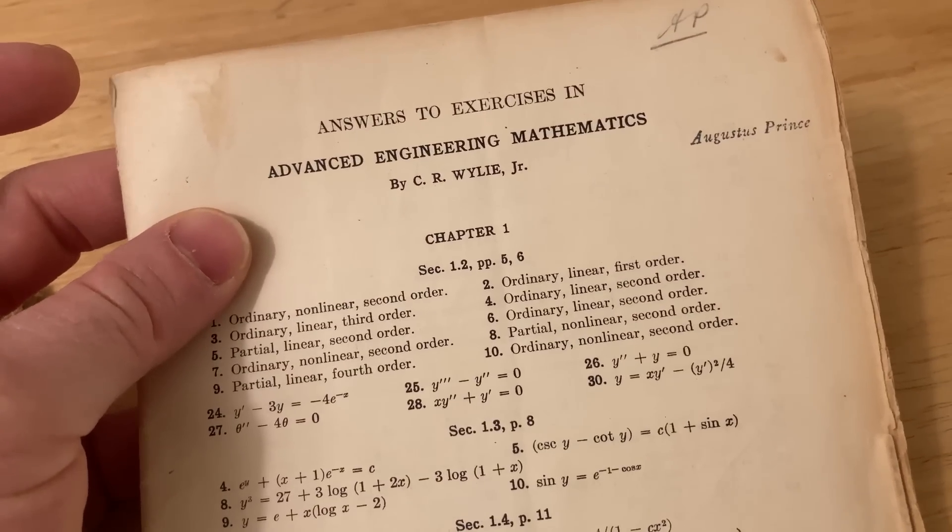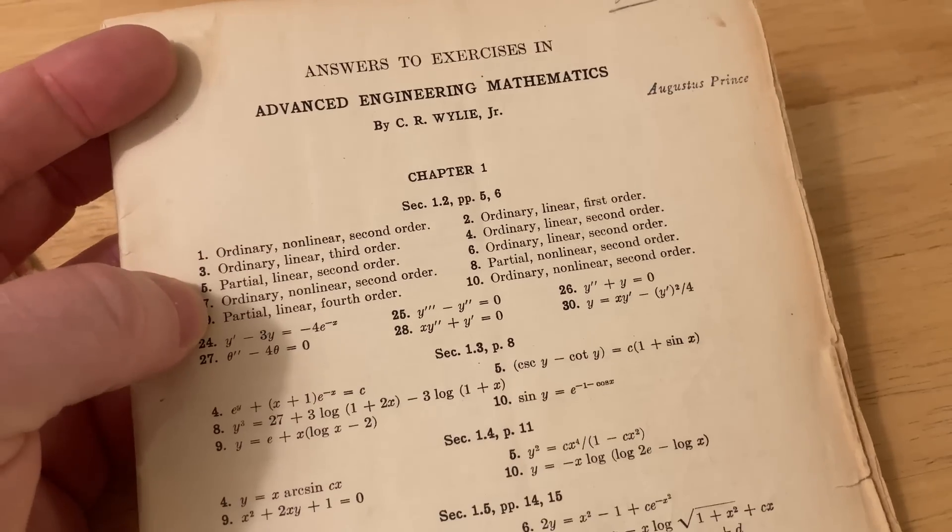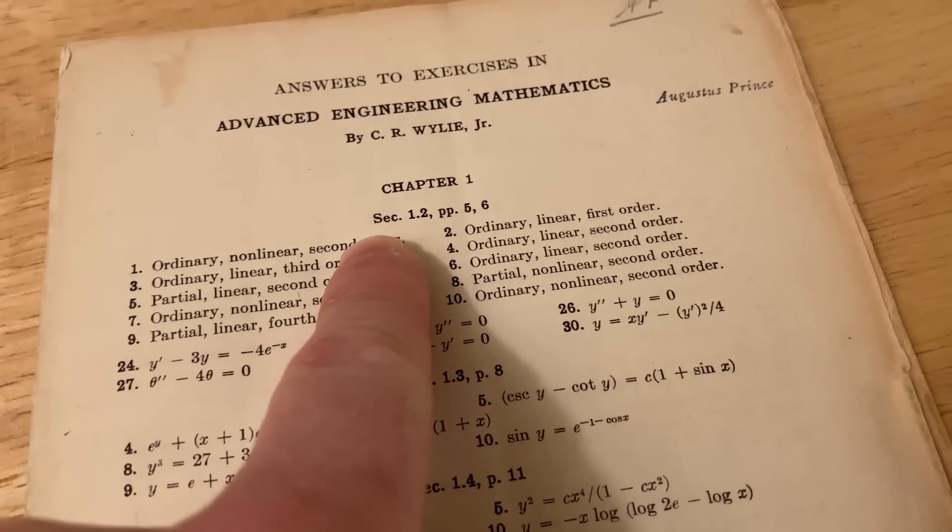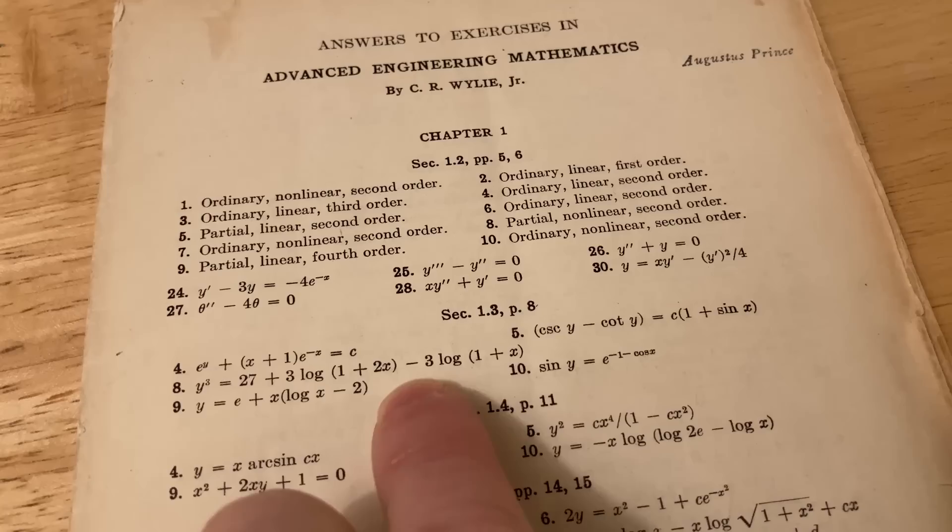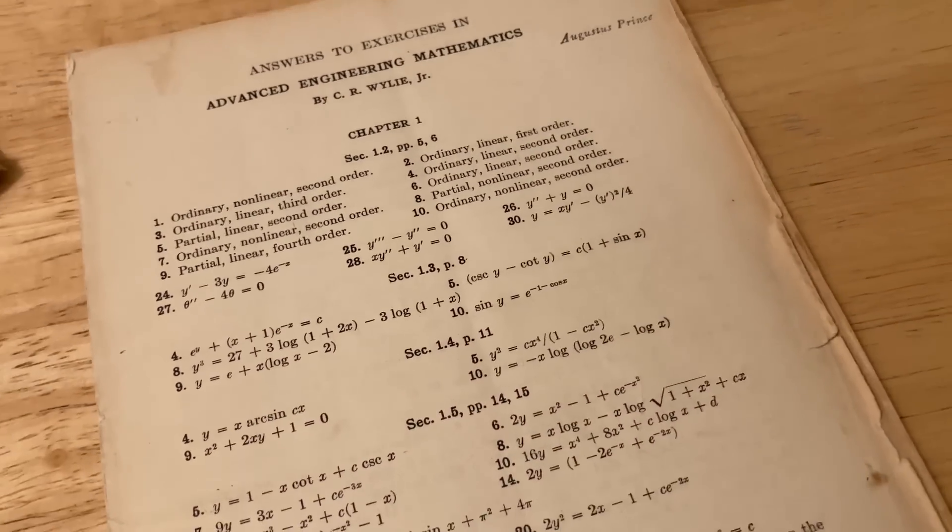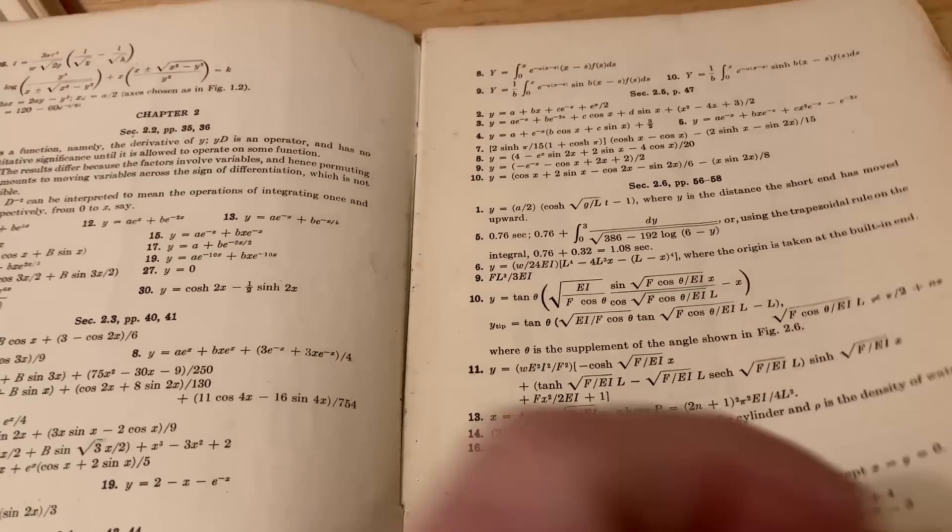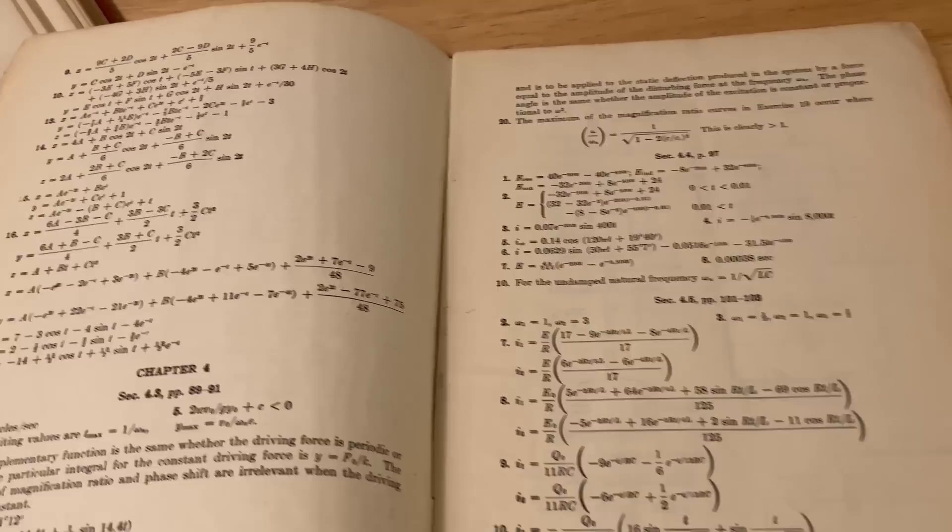This is the interesting part - Answers to Exercises in Advanced Engineering Mathematics by Augustus Prince. Really cool. Here you can see it has answers to almost all of the problems. For example, here it's missing number 29 in the first section, here it's missing one, two, three, six, and seven.